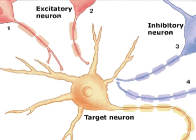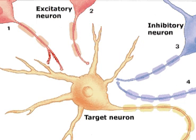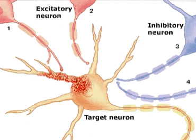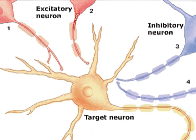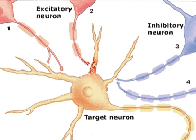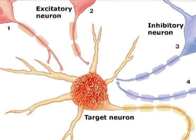Action potentials arrive from neurons 1 and 2 at long intervals. The excitation induced by neuron 1 diminishes before the excitation induced by neuron 2 arrives, and no action potential is generated.